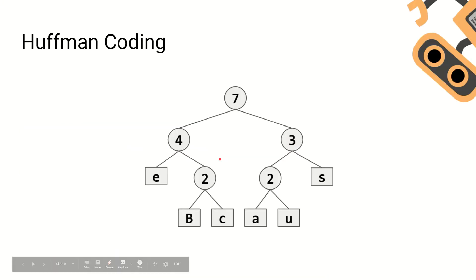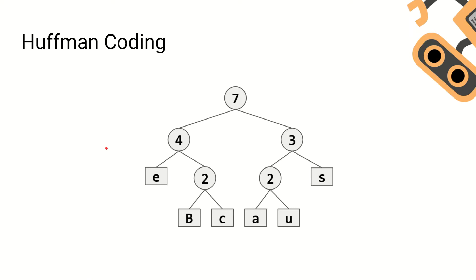When answering questions on Huffman coding in exams, you will not be asked to create a Huffman tree — you will however be asked to interpret one. Here's an example of a Huffman tree. The first thing you would do is label each node with the right values. All of the left nodes will be represented as zero, and all of the right nodes will be represented as one. This is demonstrated in the example in front of you.